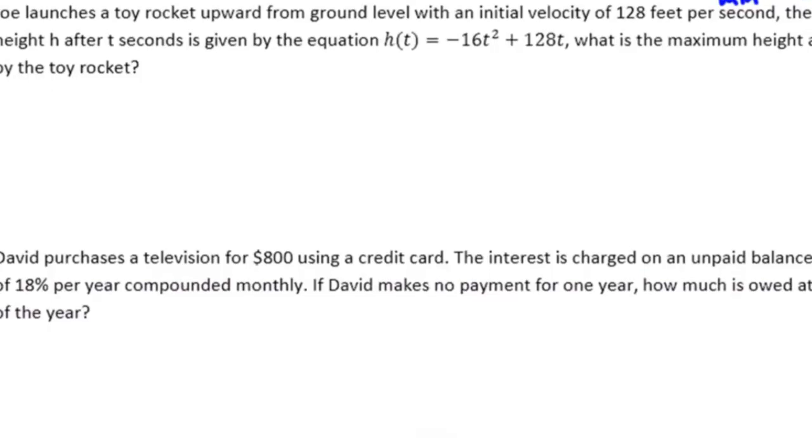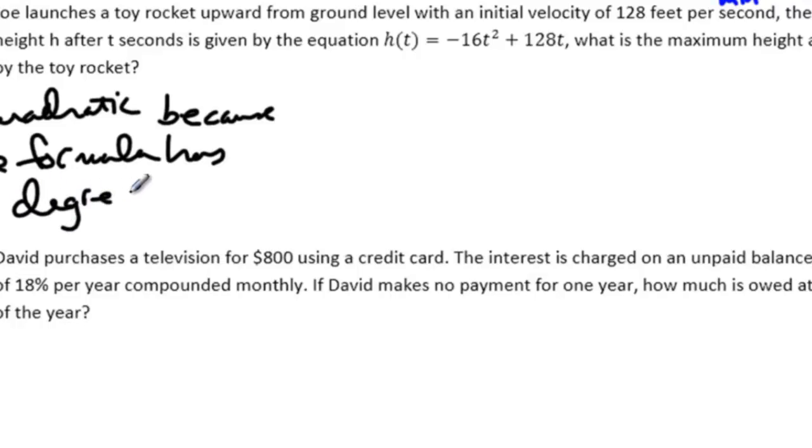Moving on. Joe launches a toy rocket upward from ground level with an initial velocity of 128 feet per second. The height after t seconds is given by the equation h of t equals negative 16 t squared plus 128 t. What is the maximum height achieved by the toy rocket? Here's one of the good things about quadratic equations. Part A. When we did these type of word problems, we were always given a function or an equation to plug into our formula. So we know right off the bat that this is quadratic because the formula has a degree of 2.